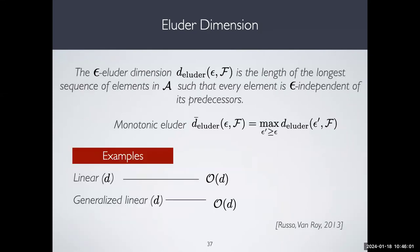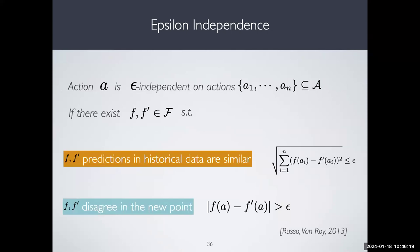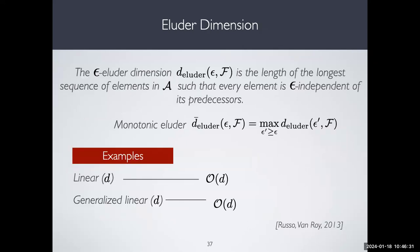The eluder dimension is defined as the length of the longest sequence of elements in the action space for a given function class, such that every action in the sequence is epsilon-independent of its predecessors. For linear function classes, the eluder dimension is O(d). The same holds for generalized linear models. Sadly, there are not many examples beyond these where eluder dimension is manageable.